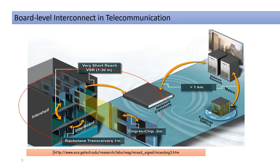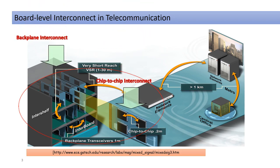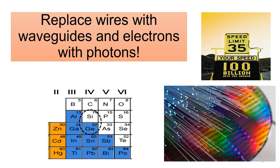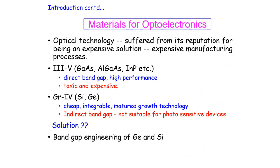Optical interconnects have been the potential solution to overcome the limitations of their electrical counterparts. In optical interconnects, we replace the wire with waveguides and electrons with photons. Therefore, the design of a suitable optical source is very important to make this technology successful.